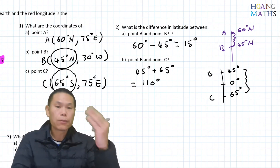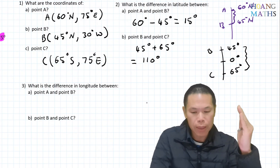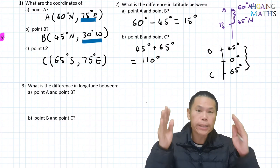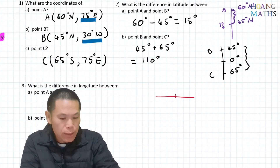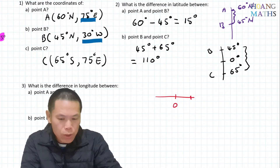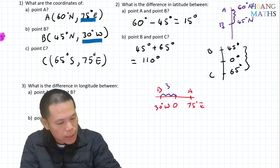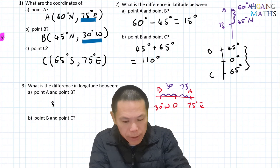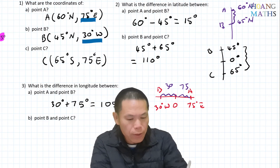Part three: the difference in longitude between A and B. Longitude is the second part of the coordinates. A is 75 degrees east and B is 30 degrees west — one is east, one is west, so we add them. Drawing a diagram: Greenwich meridian at zero, A is 75 degrees east, B is 30 degrees west. So 75 plus 30 equals 105 degrees difference.